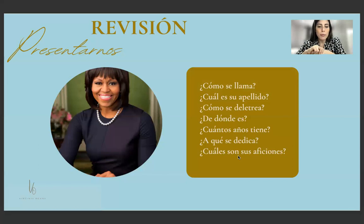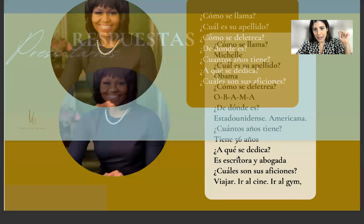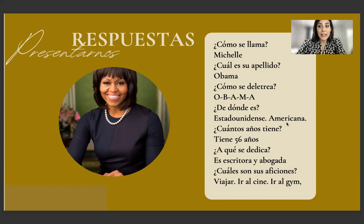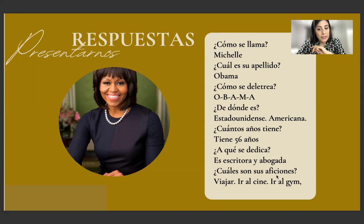Vamos a controlar las respuestas. ¿Cómo se llama? Michelle. ¿Cuál es su apellido? Obama — ¿cómo se deletrea? O-B-A-M-A. ¿De dónde es? Estadounidense, or americana, or we can say es de Estados Unidos. ¿Cuántos años tiene? Tiene — with the verb tener — 56 años. ¿A qué se dedica? Es escritora y abogada — lawyer. ¿Cuáles son sus aficiones? Viajar, ir al cine, ir al gimnasio. The important thing is to revise the hobbies we saw in Spanish.